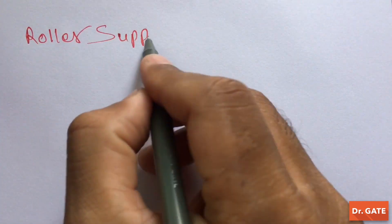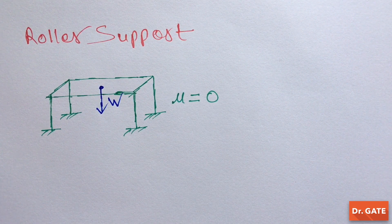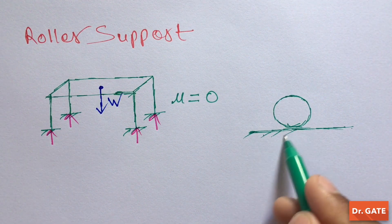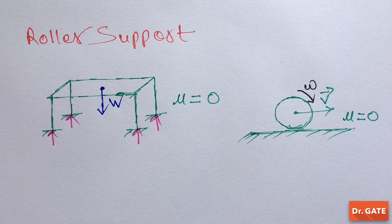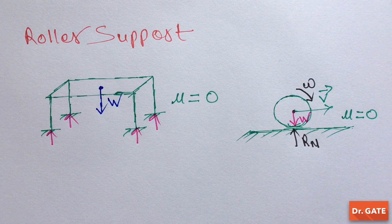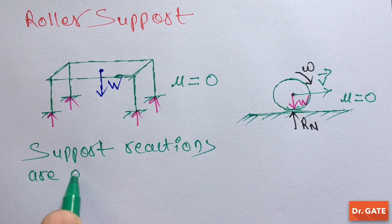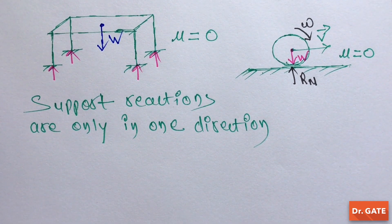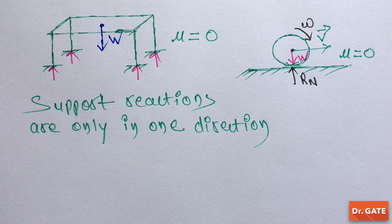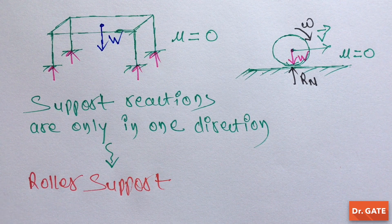Let's begin with roller support. Suppose this is a table on a frictionless ground. Then the weight of this table will act downward, and in order to counter this weight, this support will apply reactions upward. Also, suppose this is a ball rolling on a frictionless surface. Then again its weight will act in the downward direction, and the normal reaction of the ground will act upward. So you can see that in these diagrams, the support reactions are only in one direction. So whenever a support can apply reactions only in one direction, it is known as roller support. And in mechanics, this roller support is represented in this way.